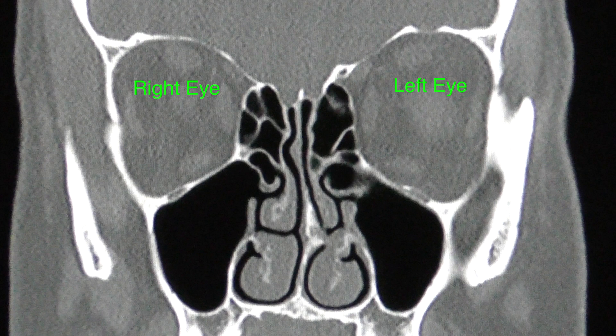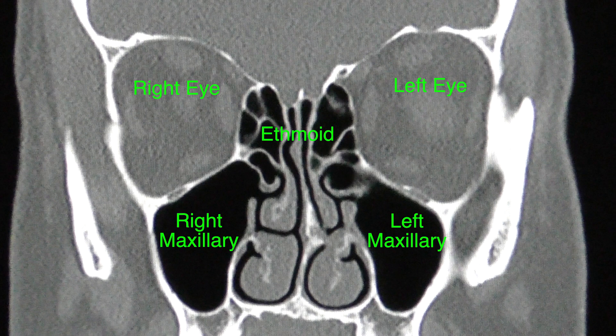The main slice that provides the most information in the coronal plane with respect to the sinuses is where one can see both eyeballs, brain, ethmoid sinuses, maxillary sinuses, and the tongue as shown here.